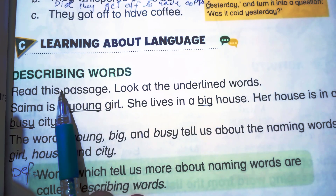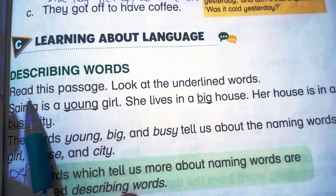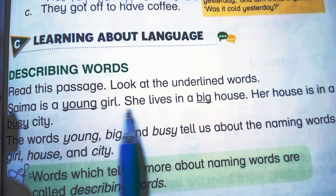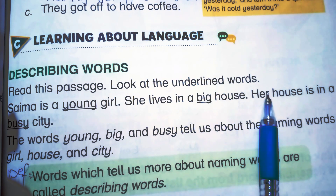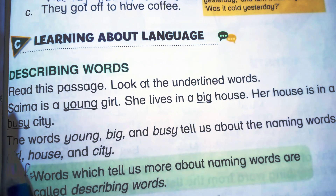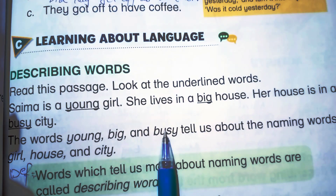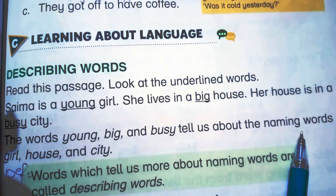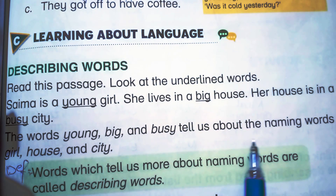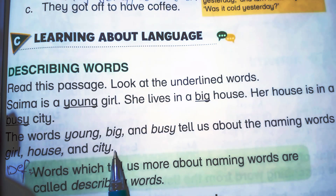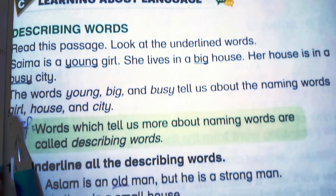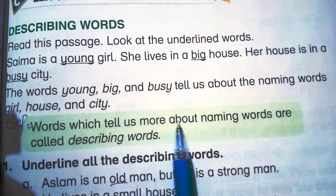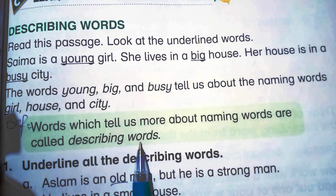Learning about Language — Describing Words (Adjectives). Read this passage and look at the underlined words: 'Saima is a young girl. She lives in a big house. Her house is in a busy city.' The words 'young,' 'big,' and 'busy' tell us about the naming words — girl, house, and city. Words that describe naming words are called describing words. They are also called adjectives.